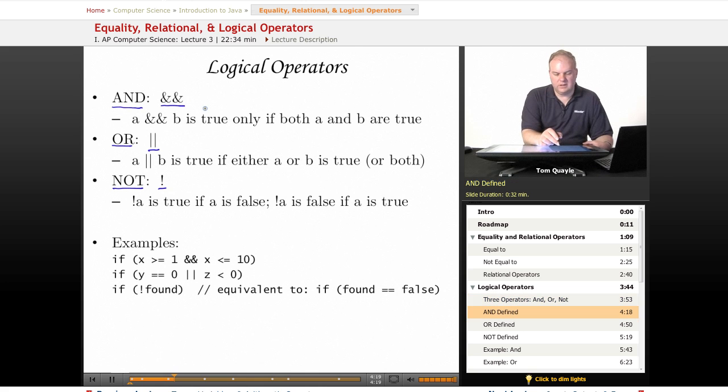The definitions of these operators are that A and B is true only if both A and B are individually true. If A is true and B is true, then A and B is true. Otherwise, any other combination, if A is false or B is false or both of them are false, then putting them together with an and results in false.